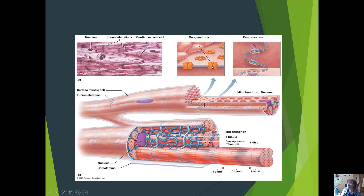The other important structures in intercalated discs are gap junctions. These connexin proteins form channels through the cell membrane, allowing ions — sodium and calcium — to travel directly between cells rather than having a depolarization travel along the sarcolemma of each cardiomyocyte, enabling rapid transmission of the electrical signal.